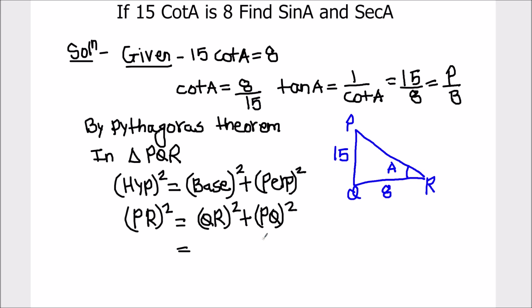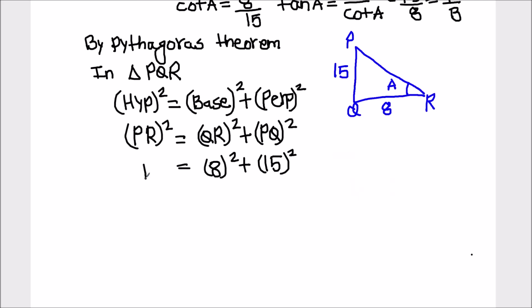We know QR is 8 and PQ is 15. So that's 8 squared plus 15 squared equals PR squared.